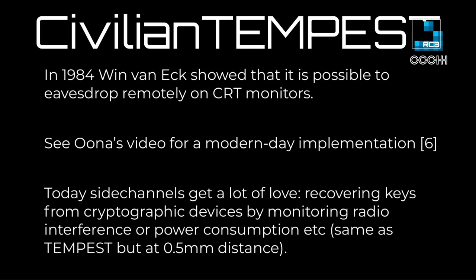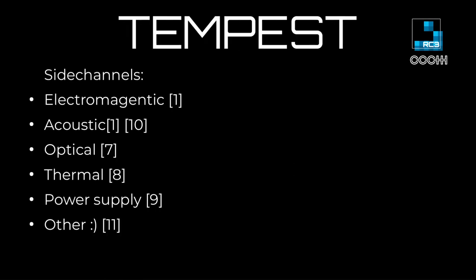Side channels are very popular right now because people use them to recover secrets from cryptographic devices by monitoring radio emissions, power consumption, or other signals — it's just like Tempest, but the distance is usually much smaller, often a millimeter or less. Side channels include the original electromagnetic channel, the acoustic side channel, the optical side channel, thermal, and others.